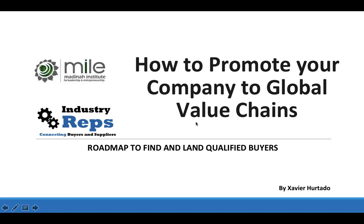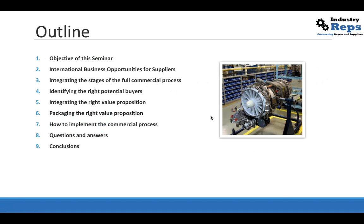This is the outline we're going to cover today. We're going to go through the objectives of this seminar, then how to find international business opportunities for suppliers, then integrating the stages of the full commercial process, how to identify the right potential buyers, and how to integrate the right value proposition — putting the right message for the right buyer. Then how to package the value proposition, how to implement a full commercial process, a Q&A session, and conclusions.